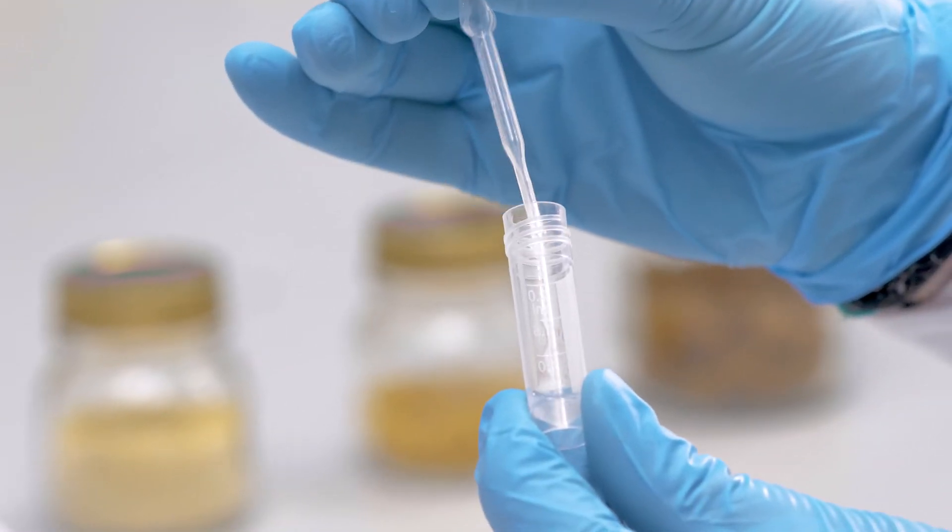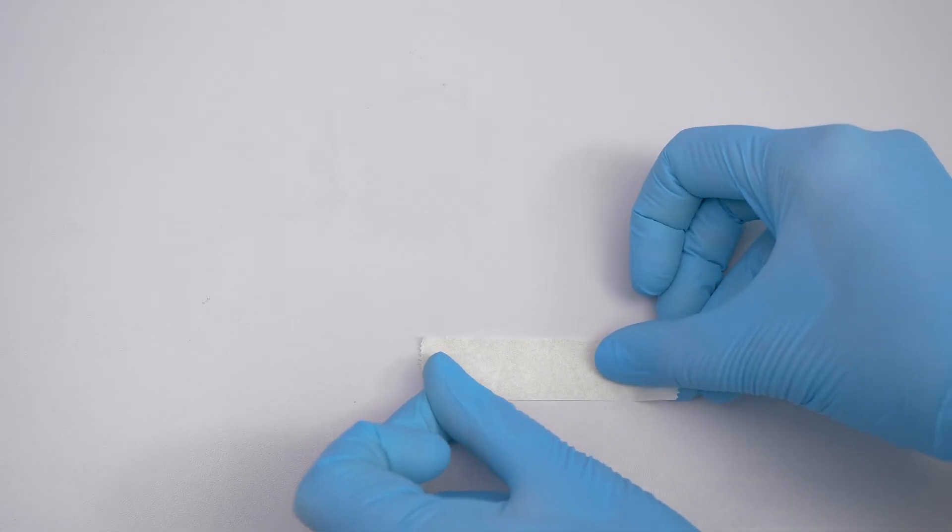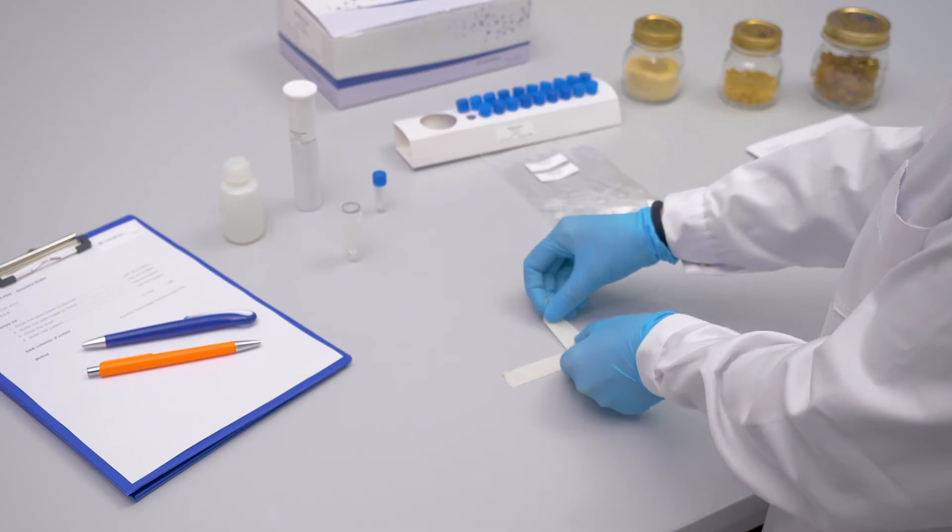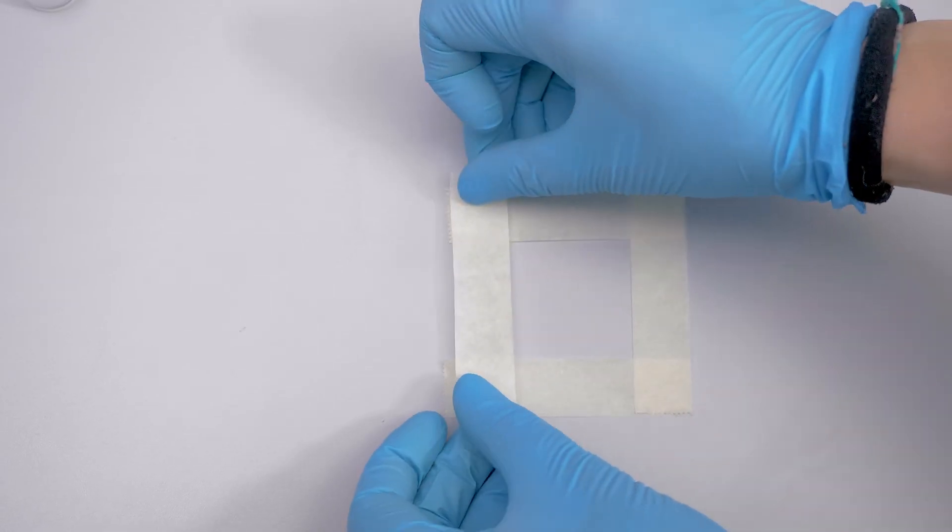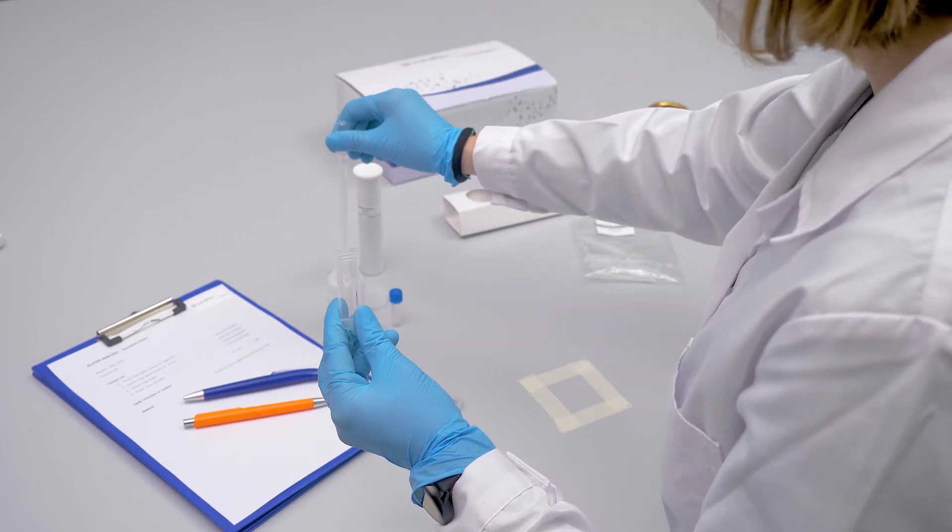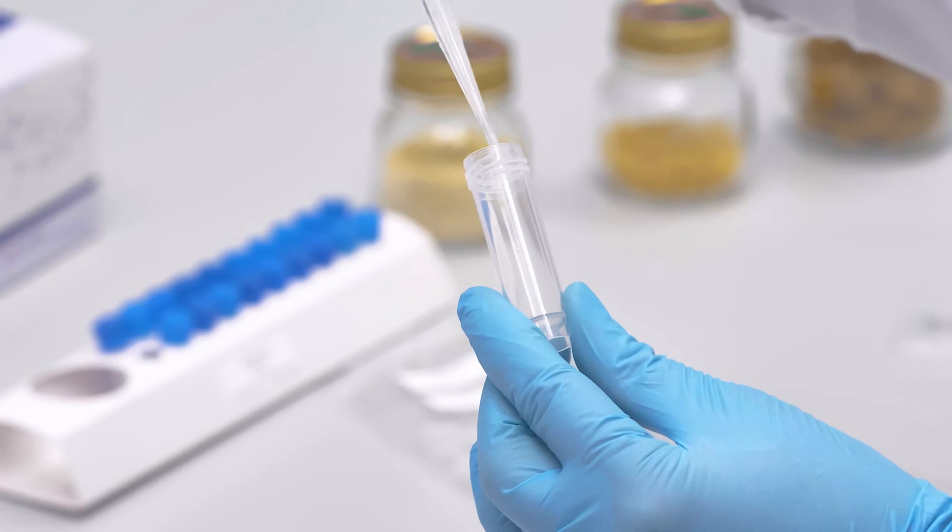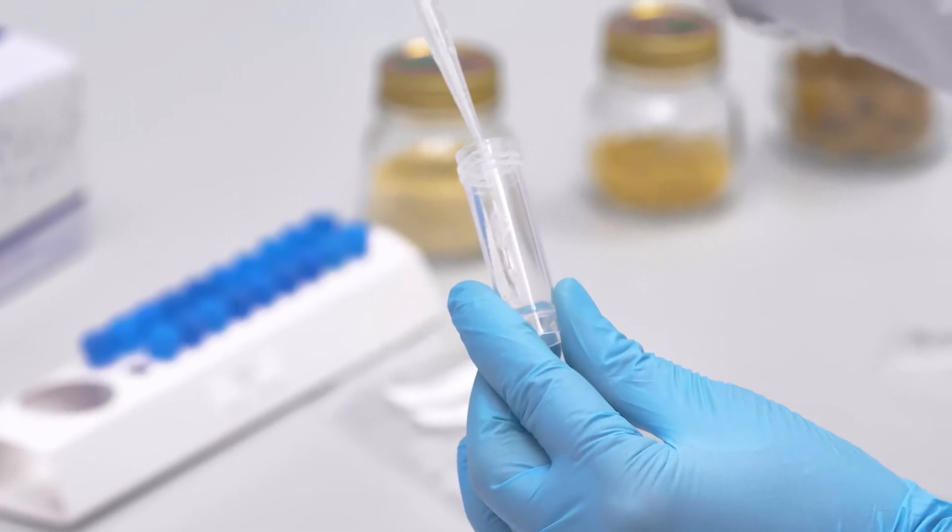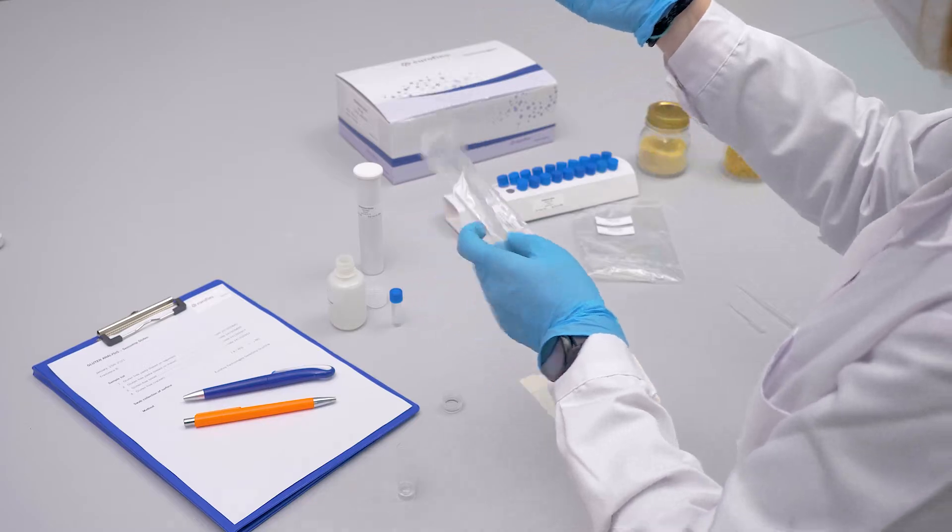The kit can also be used directly on surfaces to monitor the efficacy of cleaning operations or to exclude potential contamination. Identify and outline an area of approximately five centimeters by five centimeters on the surface to be tested. Transfer 1 milliliter of the ready-to-use dilution buffer into the extraction tube and dip the swab into the tube before swabbing the surface.